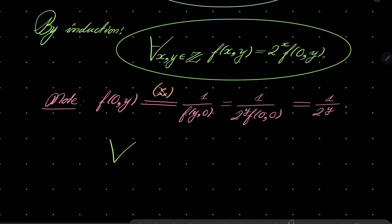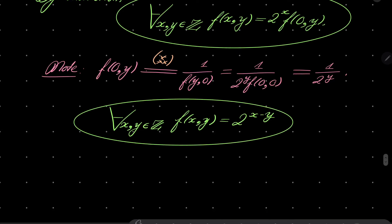So it's 1 over 2 to the power of y, which gives us the following: that for every integers x and y, f(x,y) is 2 to the power of x times 1 over 2 to the power of y, which can be written compactly as 2 to the power x minus y. And this is actually our solution set, but let's do verification to be sure.